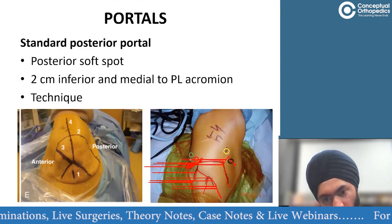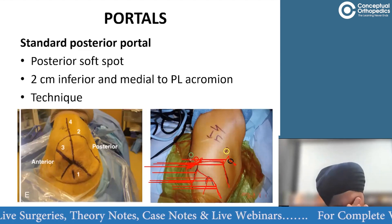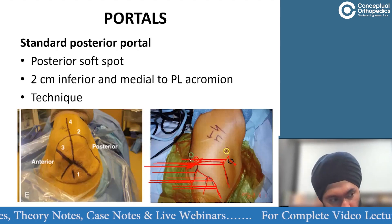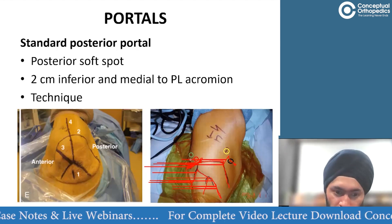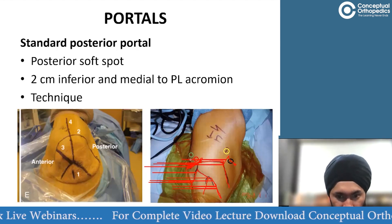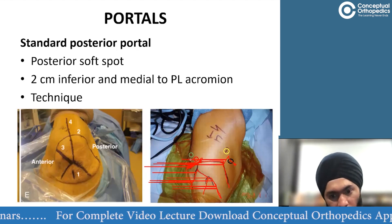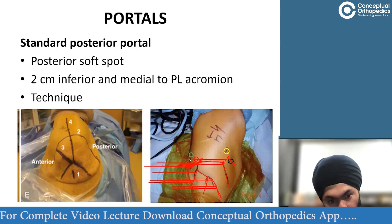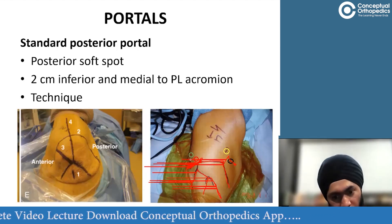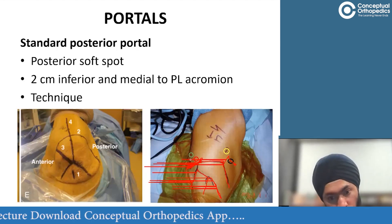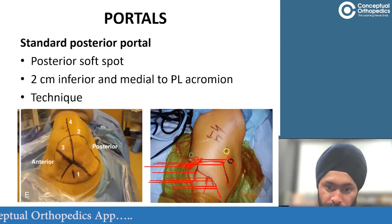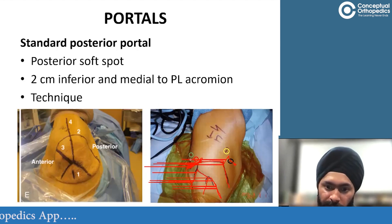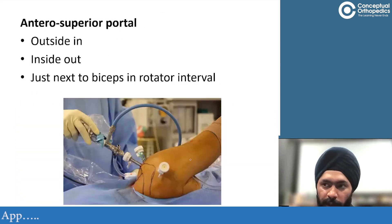The safe area for a shoulder surgeon is lateral to the line joining the acromion to the coracoid — there are no important neurovascular structures in this zone. Medial to this line you will encounter the brachial plexus and other vascular structures. As a general principle, especially early in your arthroscopic career, stay lateral to this line. The anterosuperior portal is just lateral to the midpoint of the coraco-acromial line.